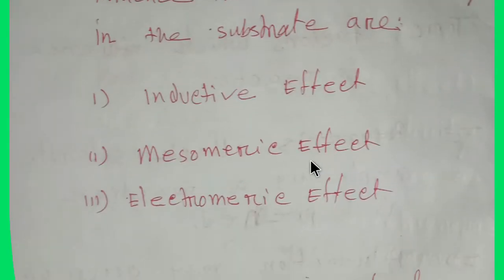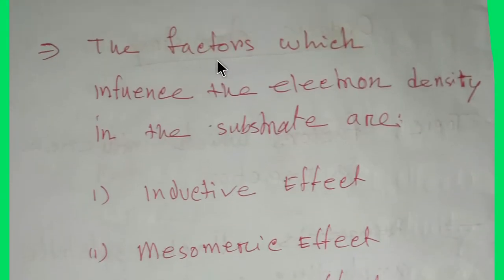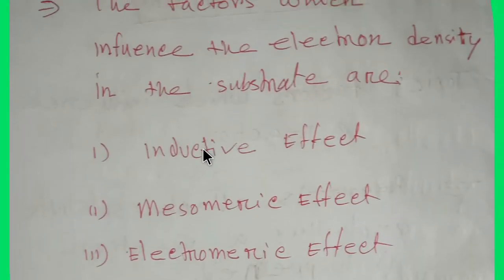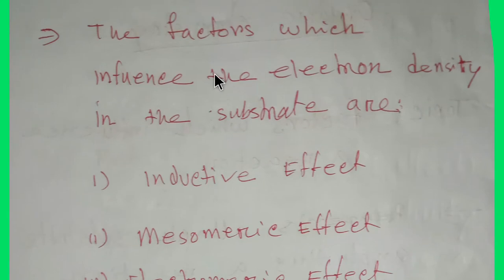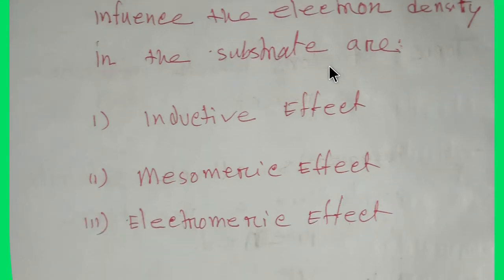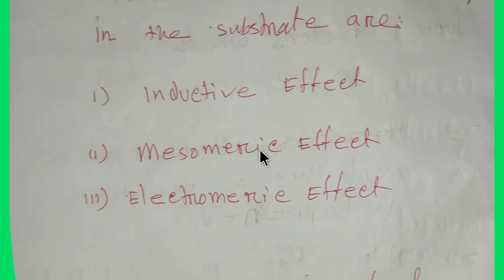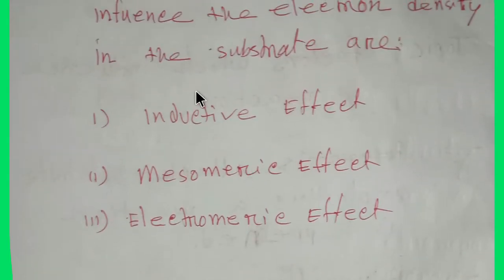Inductive effect, mesmeric effect, and electromagnetic effect — these kinds of effects or factors influence the reaction. The factors which influence the electron density in the substrate are inductive effect, mesmeric effect, and electromagnetic effect. We have to learn these three effects separately, but today we are going to learn about the inductive effect.